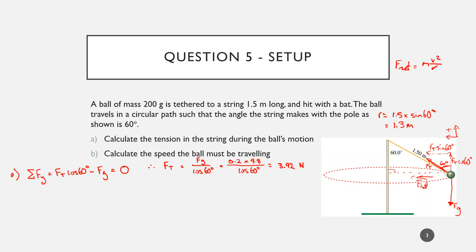Quick recap: we decomposed our forces into components and noticed that because there is no net force in the vertical direction, all vertical forces add up to zero. We solved for tension knowing F_g and cos(60°), giving us a tension of 3.92 N.